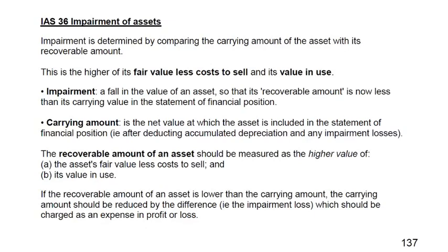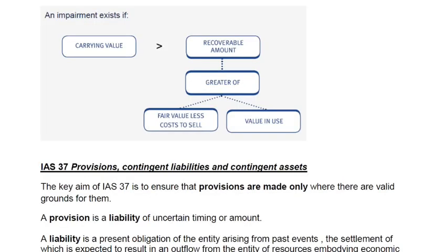In a cost model, we do not use the revaluation reserve account; we only use impairment loss. There is no such thing as an impairment gain — there is only impairment loss. According to the prudence concept, if the asset has lost value during the year we must record that loss immediately, but if the asset has increased in value we do not account for the increment.